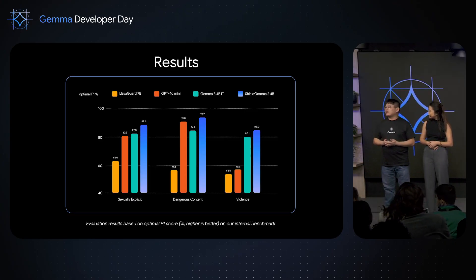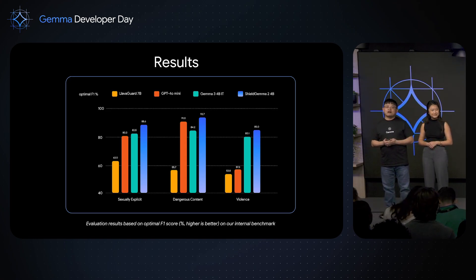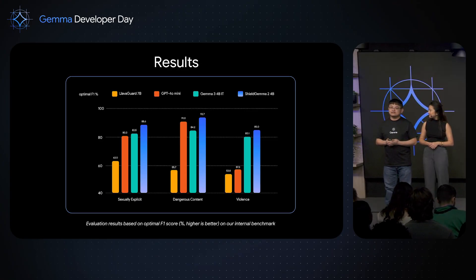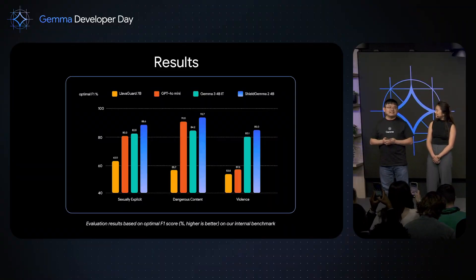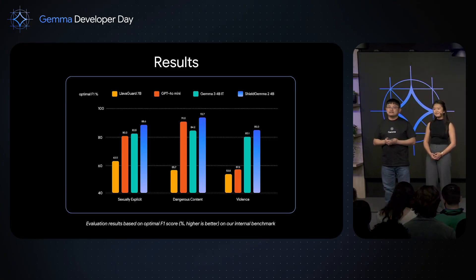We have seen how and where Shield Gemma can be used. Now let's look at how Shield Gemma performs. We are showing our evaluation results based on our internal evaluation dataset. We have compared Shield Gemma 2 with all other leading models with similar sizes such as LavaGuard 7B, GPT-4 Mini, and Outbox Gemma 3 4B. The x-axis represents the key harm types such as sexually explicit, dangerous content, and violence, and the y-axis represents the macro F1 score — a higher score indicates better performance. Shield Gemma 2, represented by the blue bars, outperforms all other models for all key harm types.